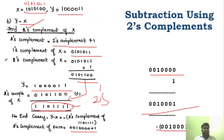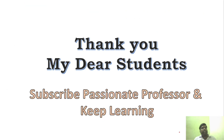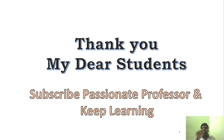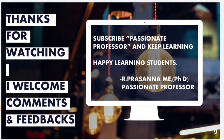So Y minus X: we find the 2's complement of the sum. First, the 1's complement, then add 1 — that gives 0, 0, 1, 0, 0, 1. That is the 2's complement. So Y minus X equals minus 0, 0, 1, 0, 0, 1. Today we have seen subtraction using 2's complement. Follow the same rules as 10's complement, but apply them to 2's complement. Hope you understand the logic. Thank you for watching — subscribe to Passionate Professor and keep learning!